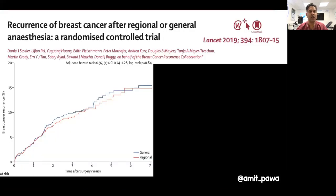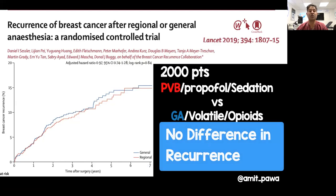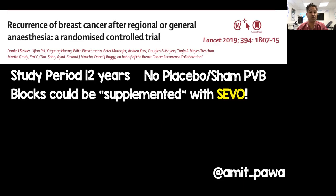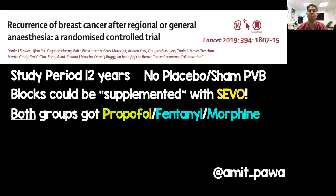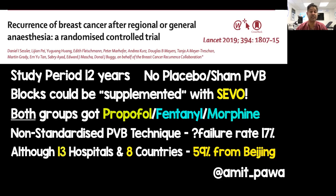On cancer recurrence — we were all waiting for the landmark Lancet paper, hoping paravertebral blocks would be a magic bullet. They took 2,000 patients having either paravertebral with propofol sedation versus GA with volatile anaesthesia and opioids. Unfortunately, this study showed no difference in cancer recurrence between groups — 10% in both. However, there were issues: the study ran for 12 years, there was no placebo paravertebral, the block group could be supplemented with sevoflurane, both groups received propofol, fentanyl and morphine, there was a non-standardised technique with up to 17% failure rate, and 59% of patients came from one centre in Beijing.